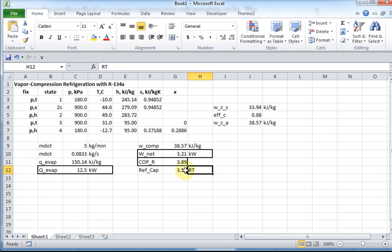Well, one refrigerant ton is 211 kilojoules of cooling per minute. So this is basically calculating what is the refrigeration capacity of this system. It's 3.56 tons, refrigerant tons.